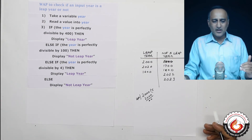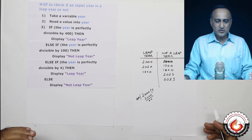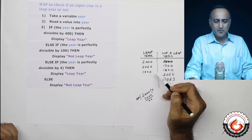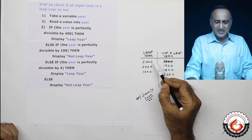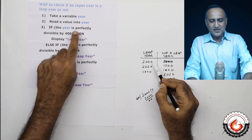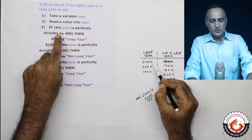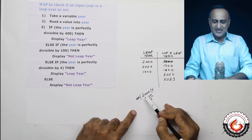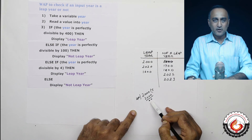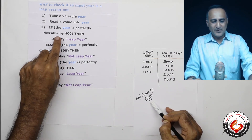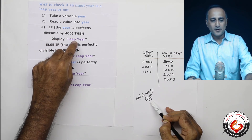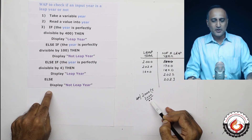To understand the working of this pseudocode, the best way is to run through certain years. Let's take the year 2000. When I divide 2000 by 400 the remainder is 0, so this condition is true and I print 'leap year' and stop.